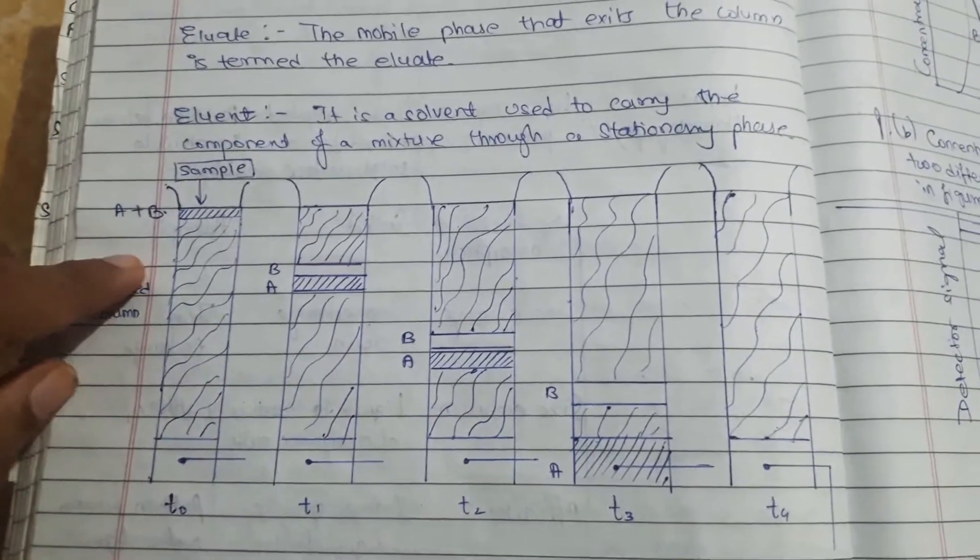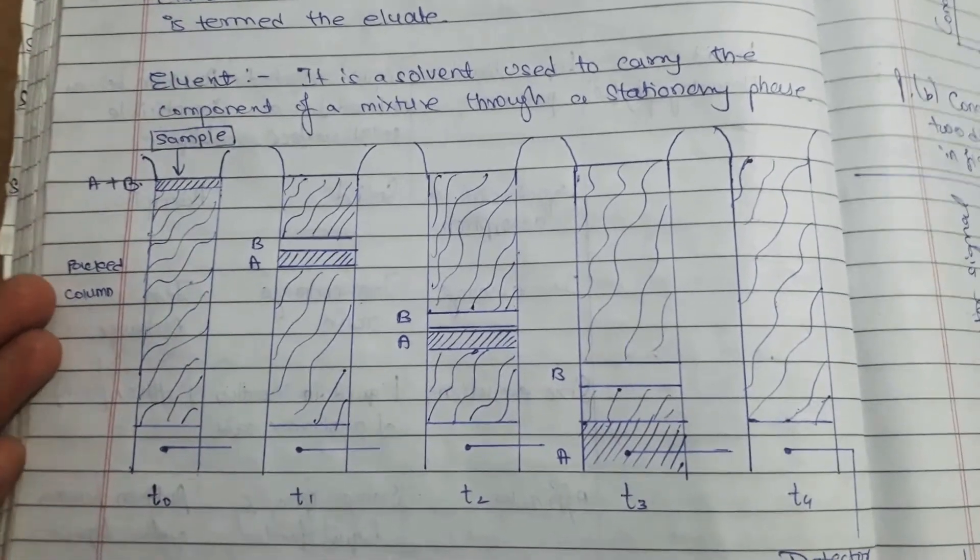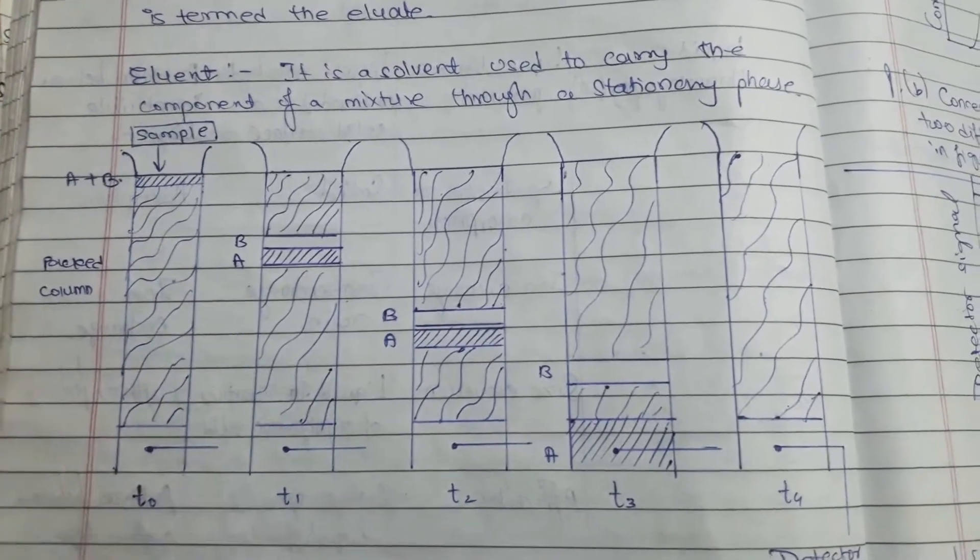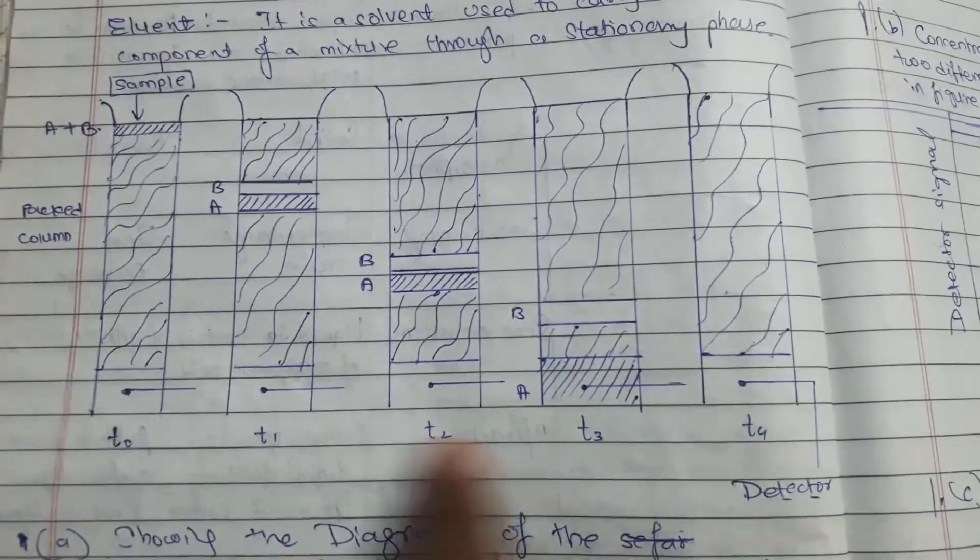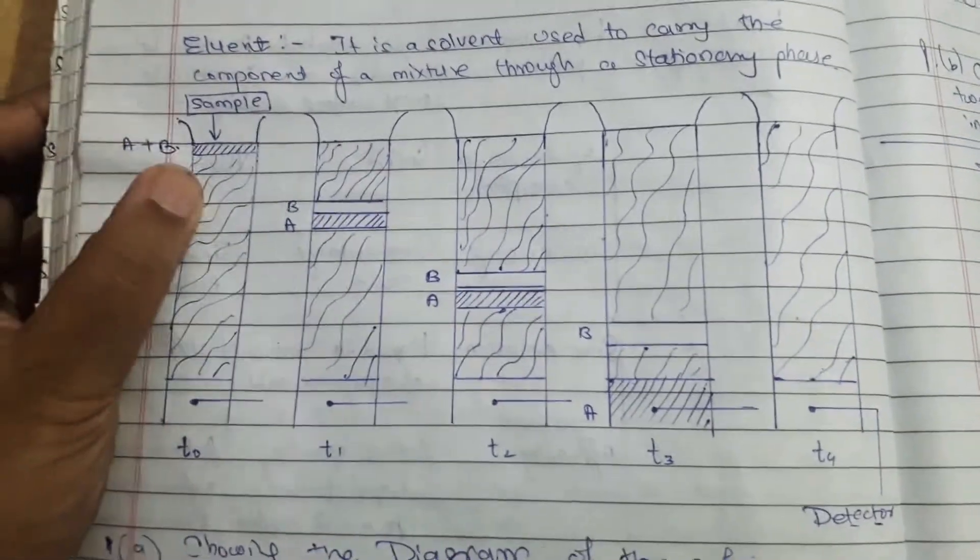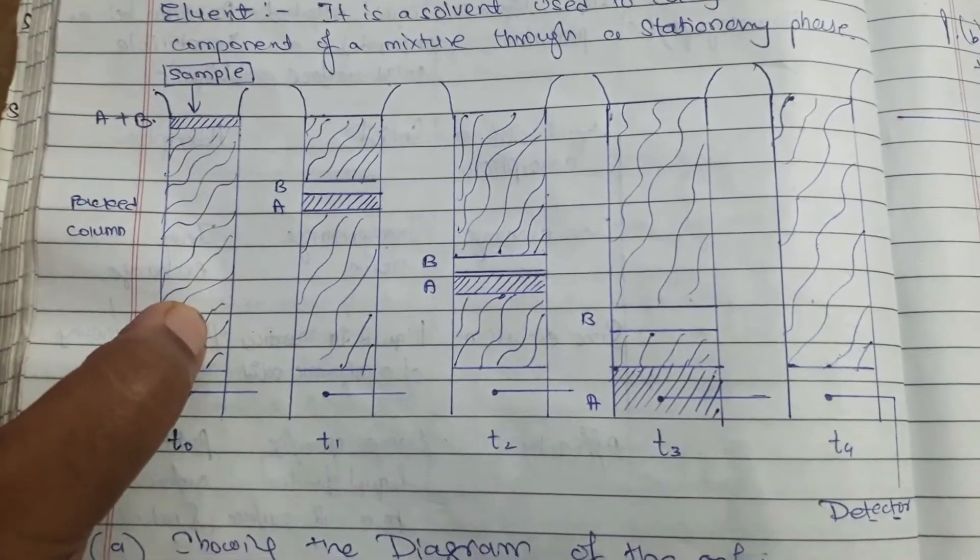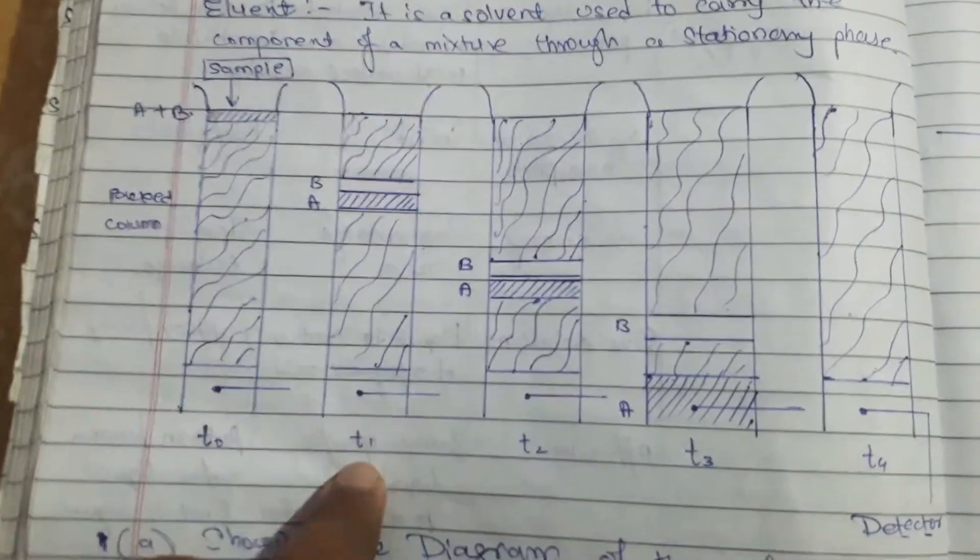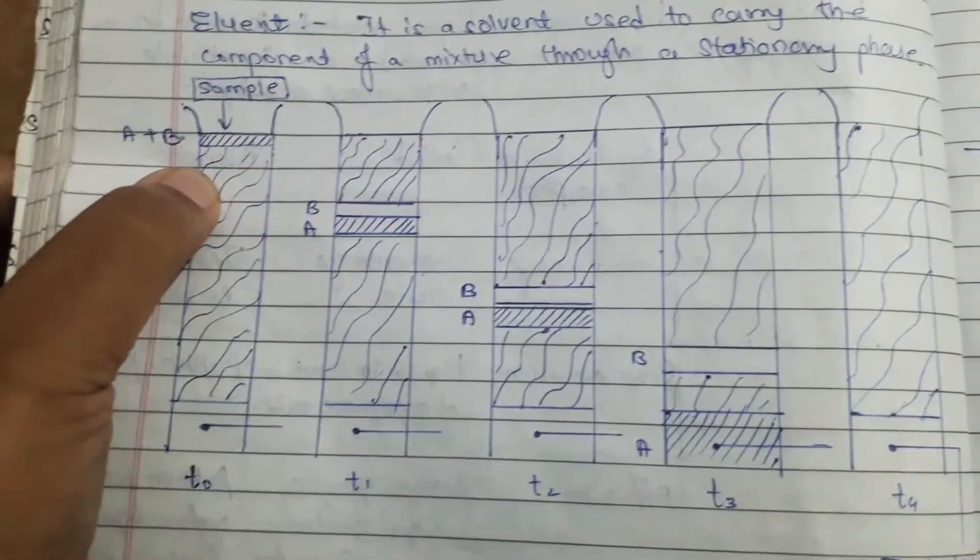There is a diagram which explains how the mixture of components undergoes elution and how they get separated at different stages of time. Here you can see samples A and B at time t0, which is on top of the column. Now as time goes on at time t1, the mixture of components A and B start to separate.